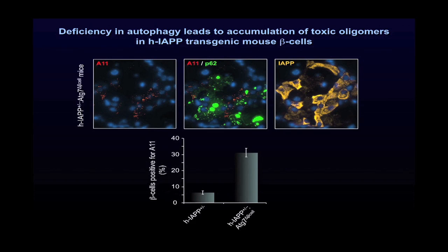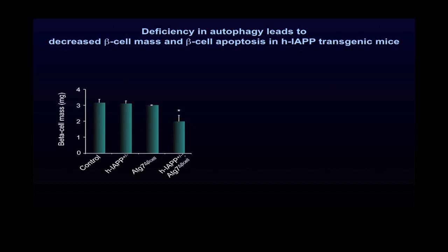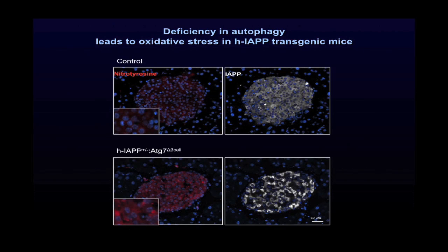And this might lead to diabetes development. Indeed, these mice had impaired fasting glucose by 12 to 13 weeks and then developed diabetes, characterized by beta cell deficiency, as you can see here, due to beta cell apoptosis, as quantified here, and at least in part to increased oxidative stress, as shown here by nitrotyrosine staining in red.